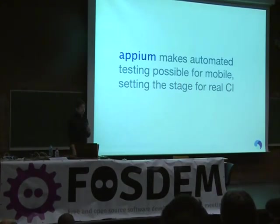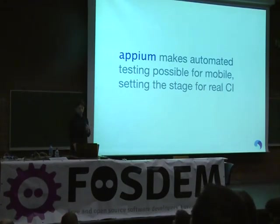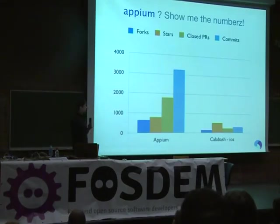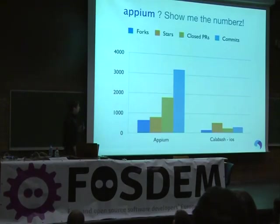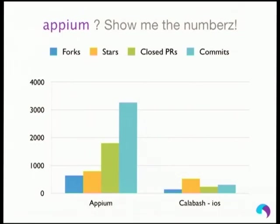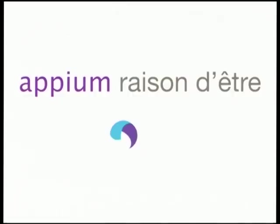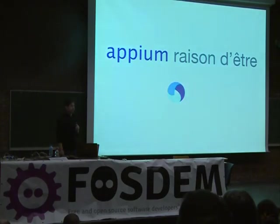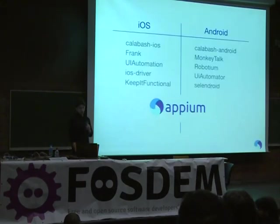Appium is a cross-platform solution that covers native, hybrid, and web apps for mobiles. The goal was to allow the creation of a real CI system for mobiles. Appium was announced more than a year ago, and has built a big community. Calabash is one of the most popular competitors, but Appium was received really well and the open source community is actively working on it.